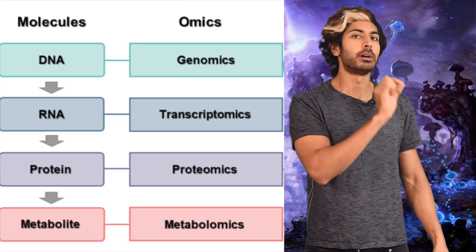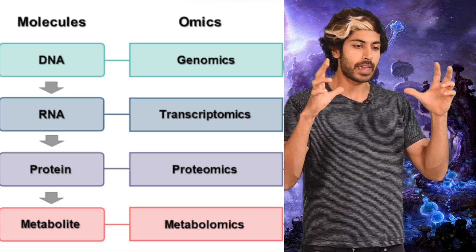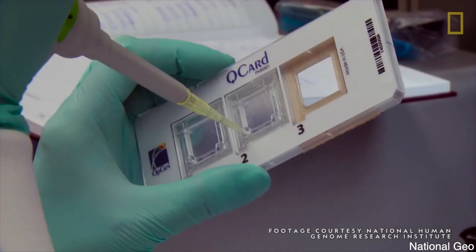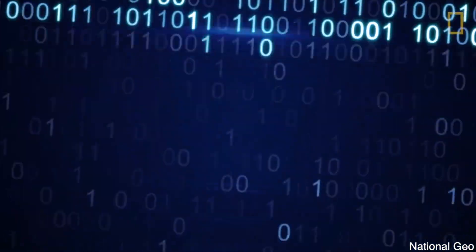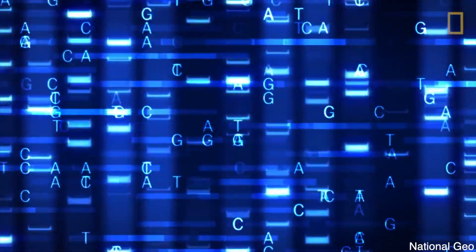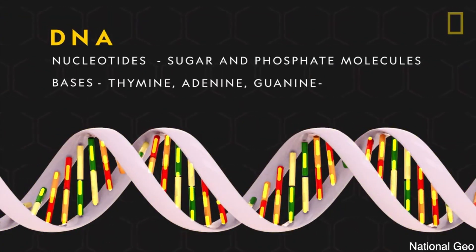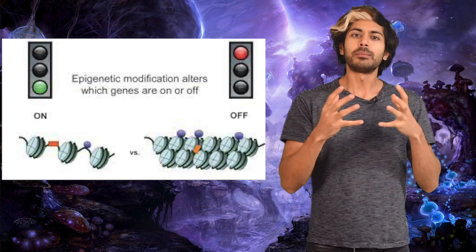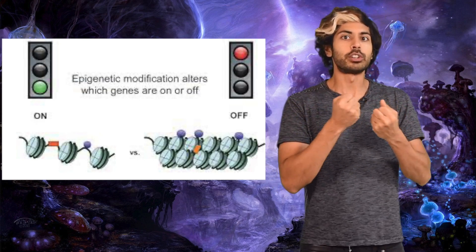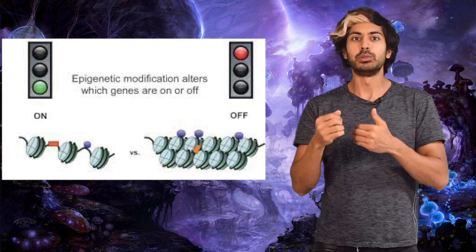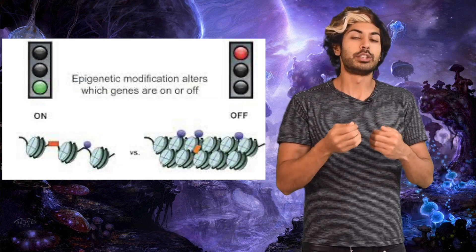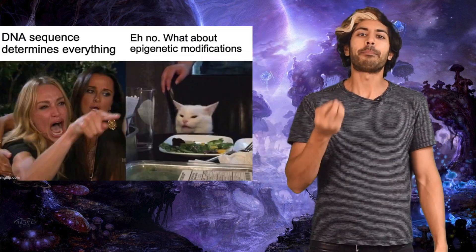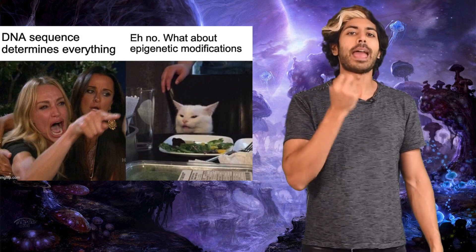Omics is a molecular term that refers to the study of a set of molecules. Genomics was the first discipline to emerge — it's the study of the entire genome, also known as DNA. DNA stores information about your traits, including physical prowess, dietary needs, intelligence, and personality. And sometimes DNA sequences change because certain genes are switched on or off due to age or exposure to environmental factors. These are called epigenetic changes, and its study is called epigenomics.